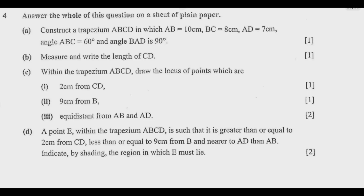Question D: A point E within the trapezium ABCD is such that it is greater than or equal to 2 cm from CD, less than or equal to 9 cm from B, and nearer to AD than AB. Indicate by shading the region in which E must lie.